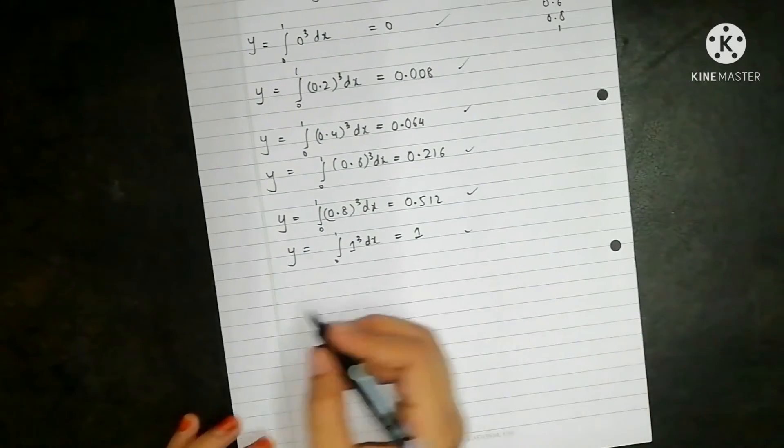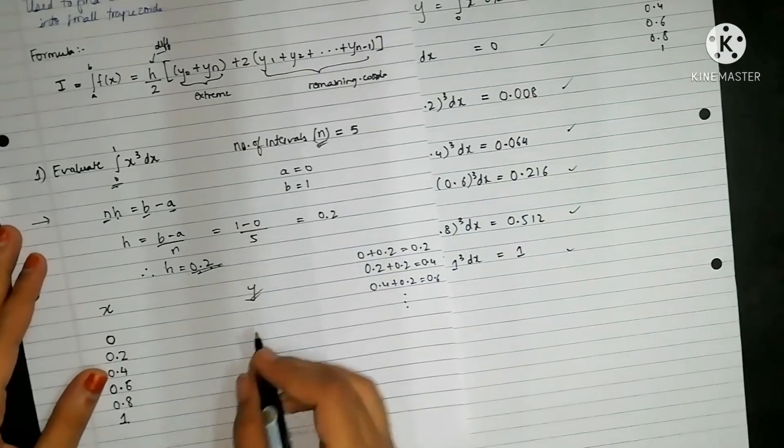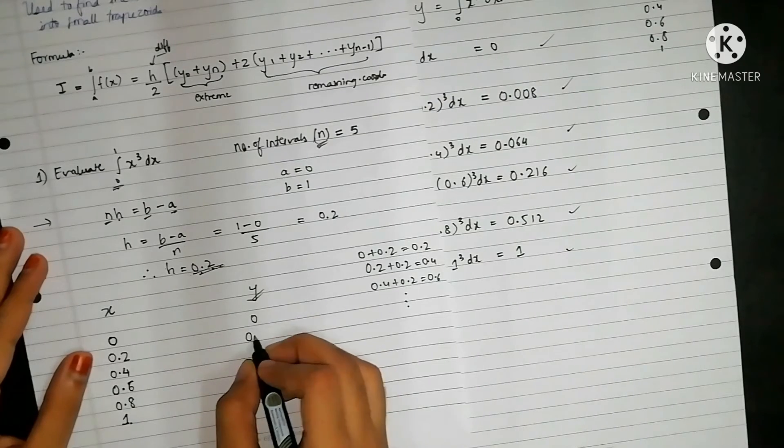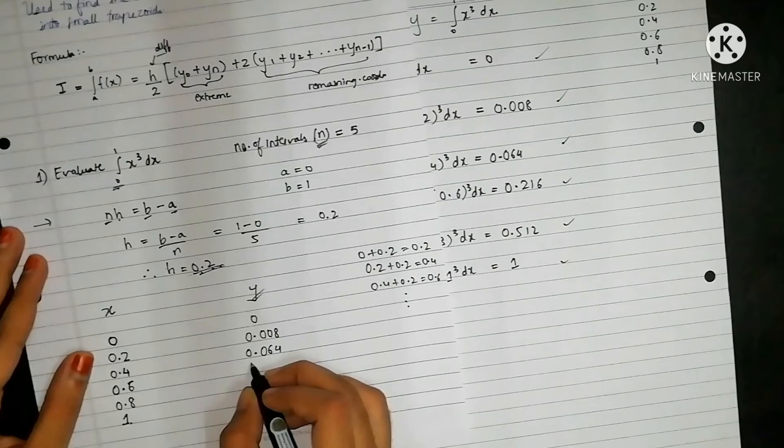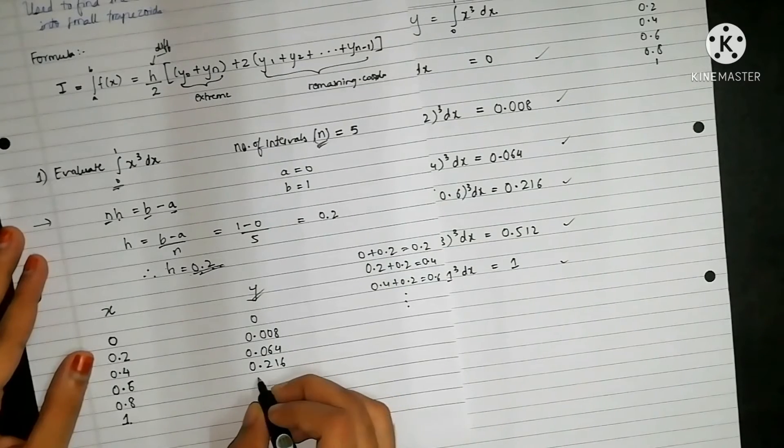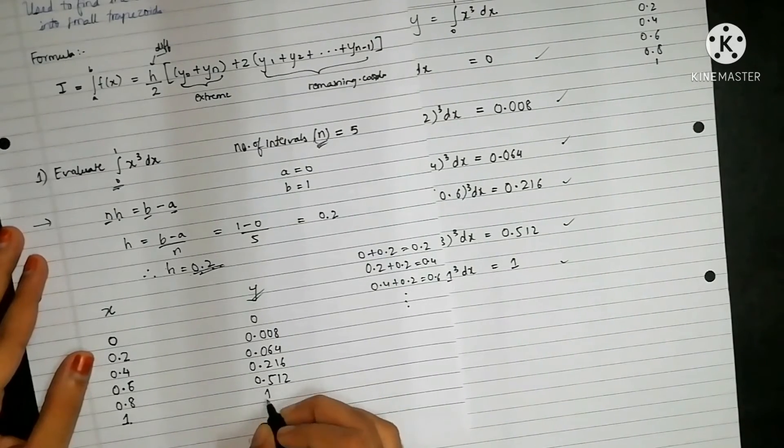Let's write it down. 0, 0.008, 0.064, 0.216, 0.512 and 1.